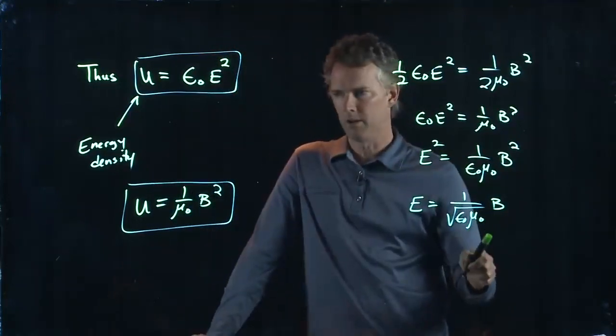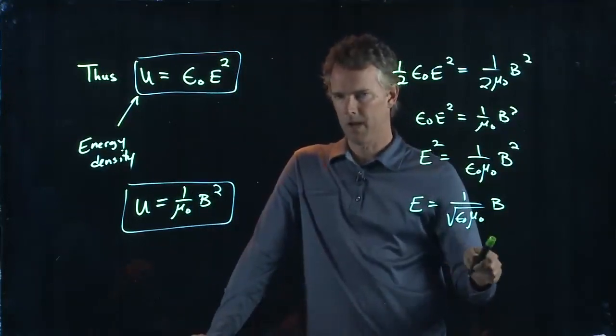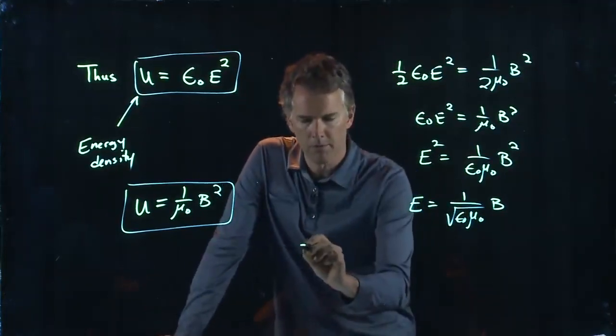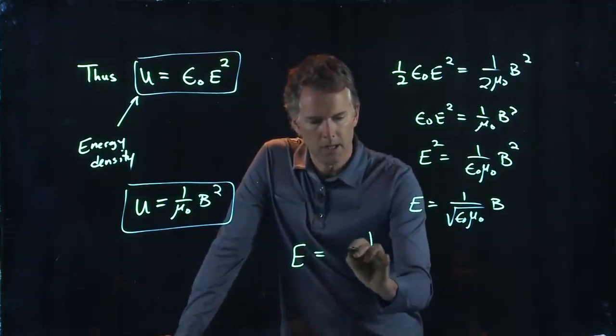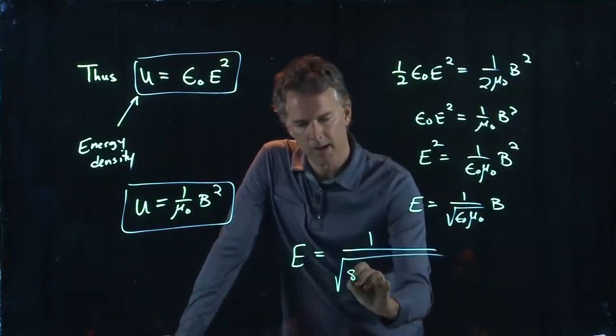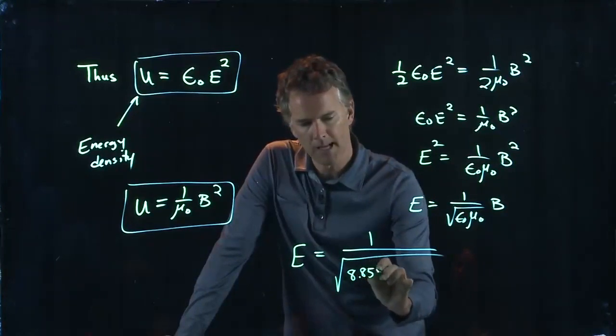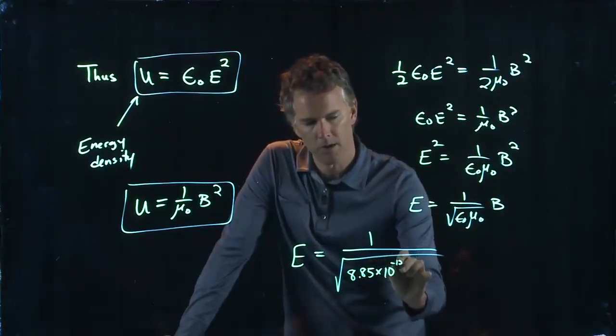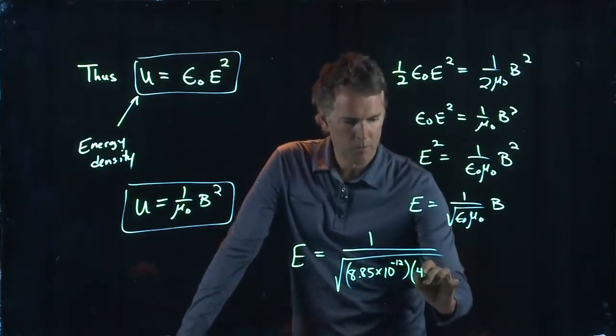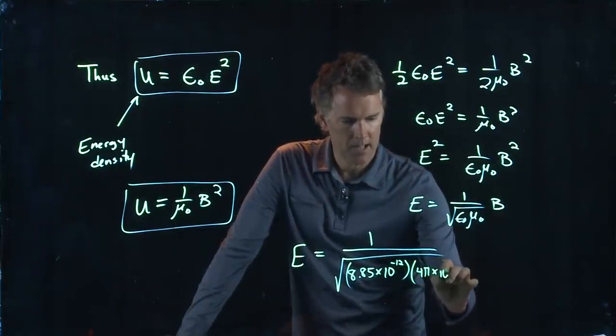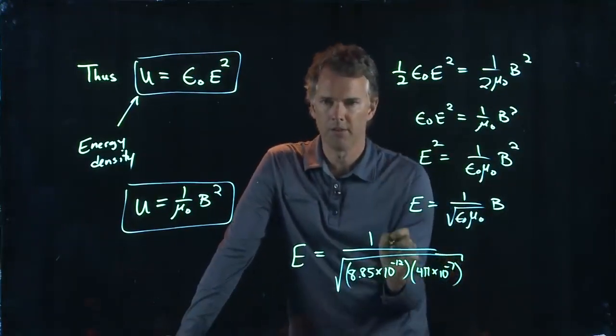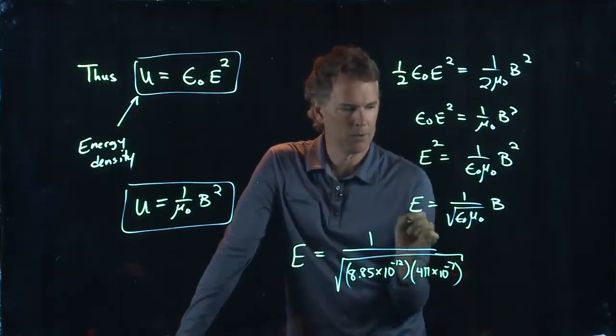Okay, but we know what these values are. We know what epsilon knot is and mu knot is. So this becomes the following: E is one over the square root of epsilon knot, which we said was 8.85 times 10 to the minus 12, times mu knot, which was 4 pi times 10 to the minus 7. And somebody punch this stuff into your calculator and tell me what you get.